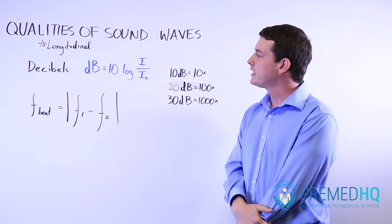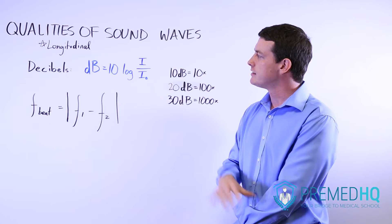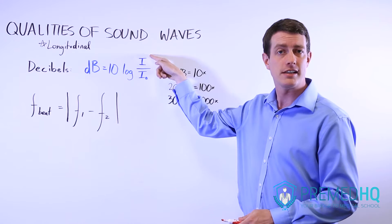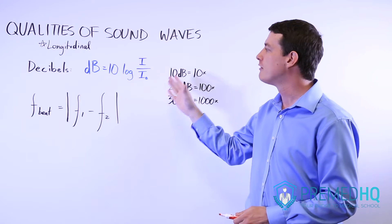When you're looking at decibels, you have to realize that decibels are calculated using the formula 10 times the logarithm of the intensity of that sound over the reference intensity.